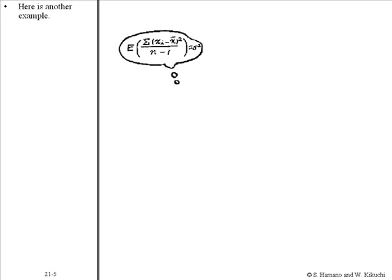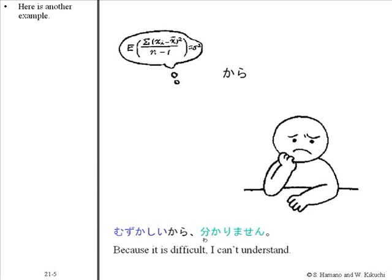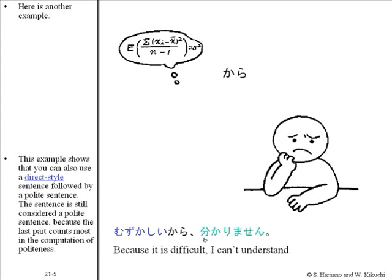Here is another example. This example shows that you can also use a direct style sentence followed by a polite sentence. The sentence is still considered a polite sentence because the last part counts most in the computation of politeness.